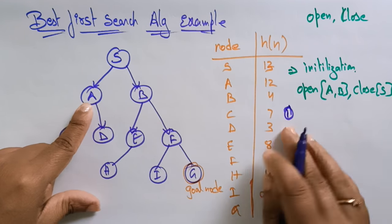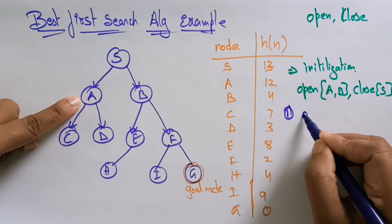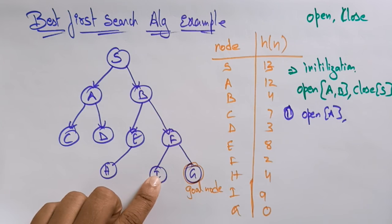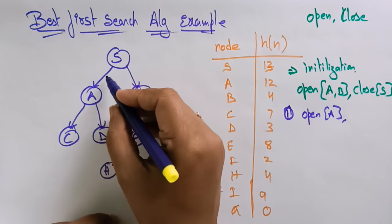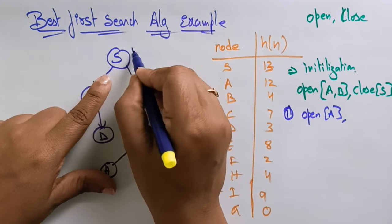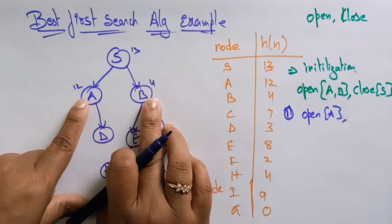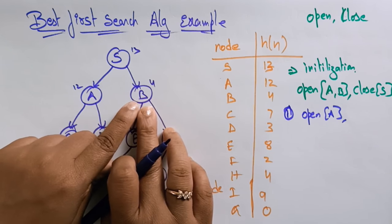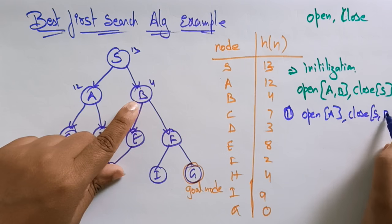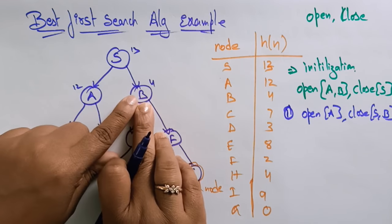In iteration one, we check node A first. The heuristic values are: S=13, A=12, and B=4. Comparing A and B, the least heuristic value is 4, which belongs to B. So we select the path S→B, discard A for now, and proceed with B.